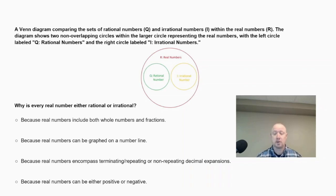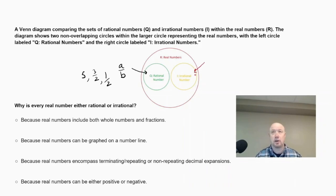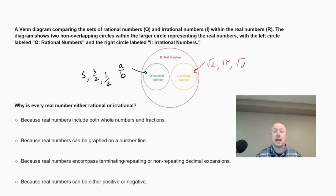A rational number can be expressed as a fraction a/b, where a and b are integers. For example, all whole numbers are rational because we can write them over 1 — like 5, 3/2, or 1/2. Irrational numbers cannot be represented as a fraction of two integers; examples include √2, π, and √7. These have non-repeating, non-terminating decimals — their decimals go on forever, like π, which you can keep expanding without repetition.